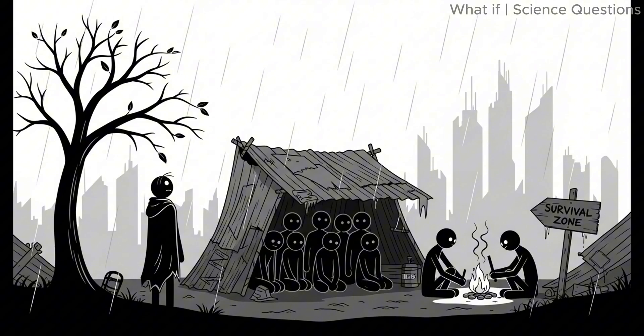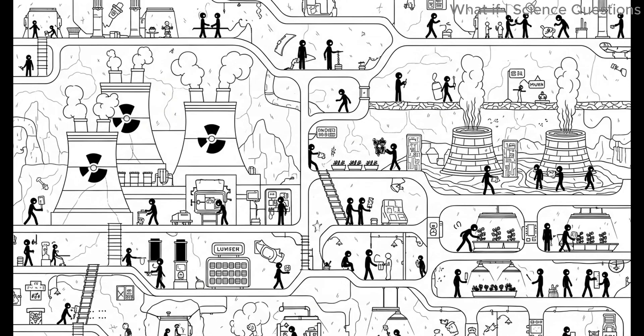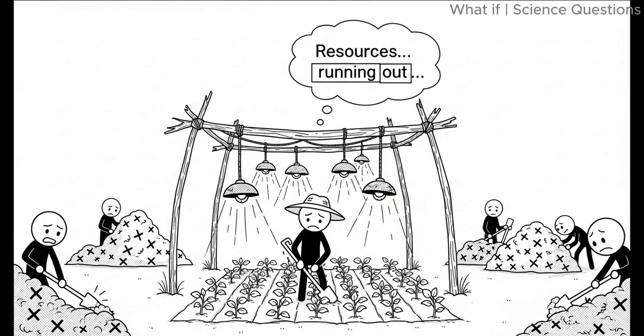Human civilization, if it hasn't collapsed yet, is forced to live in extreme survival mode. People might move underground, building vast shelters powered by nuclear reactors or geothermal plants. Some could attempt to create artificial light farms to keep plants alive. But resources would run out quickly.